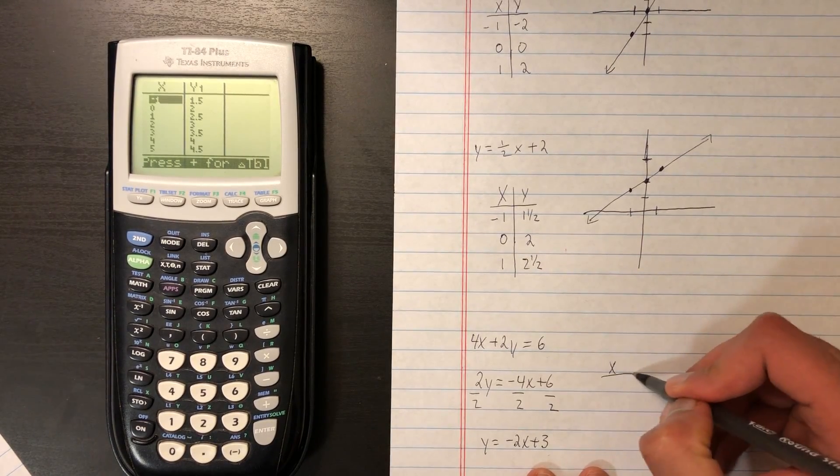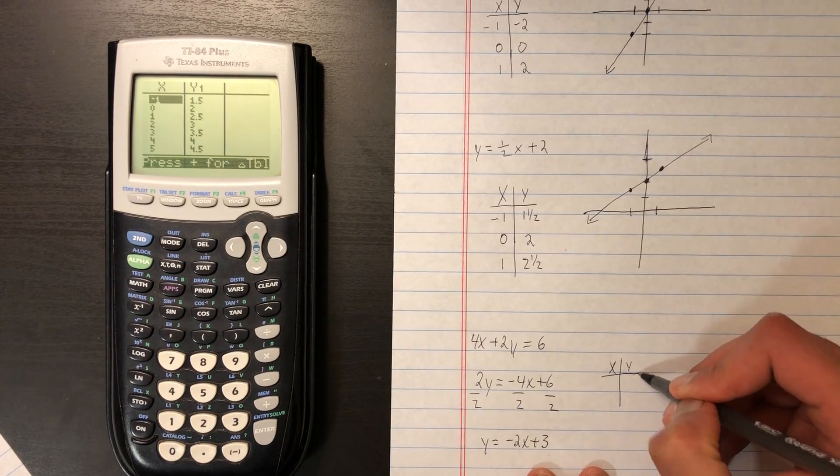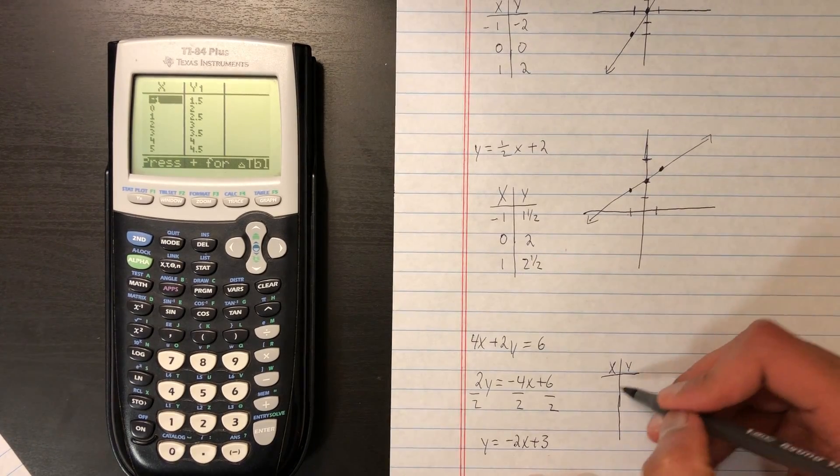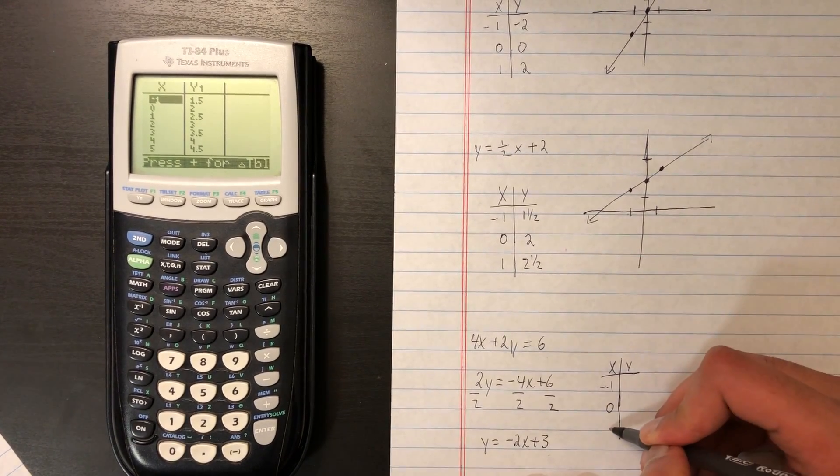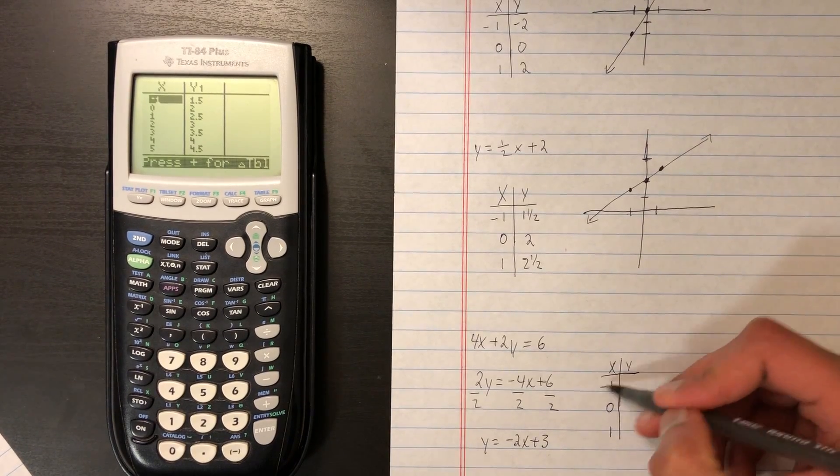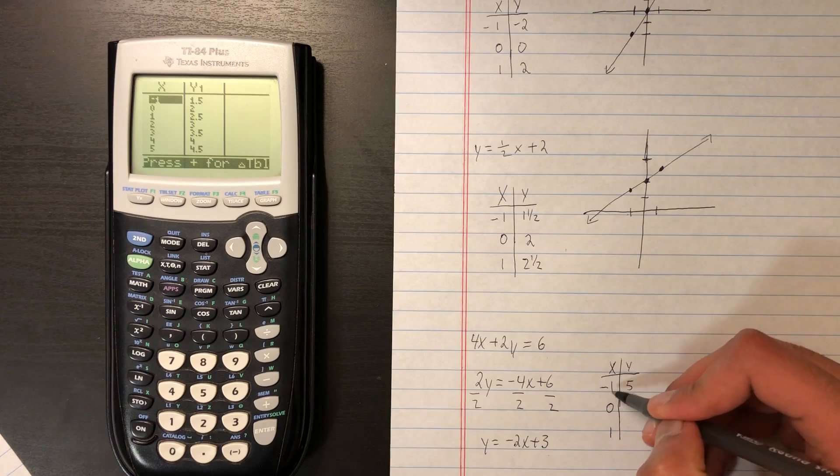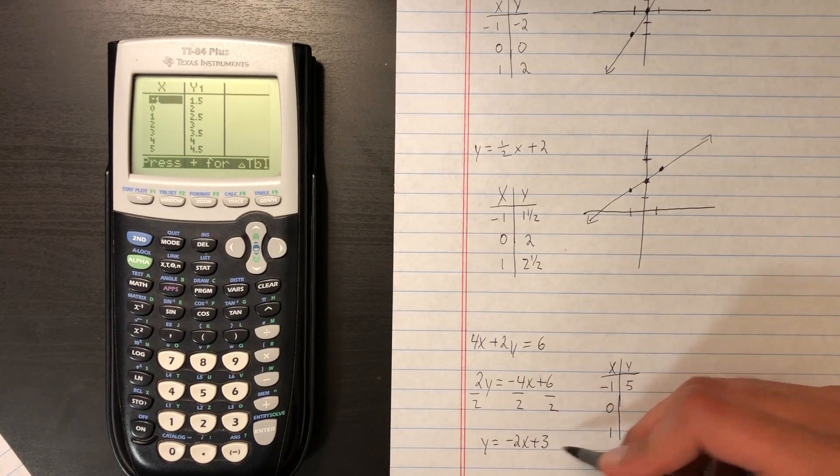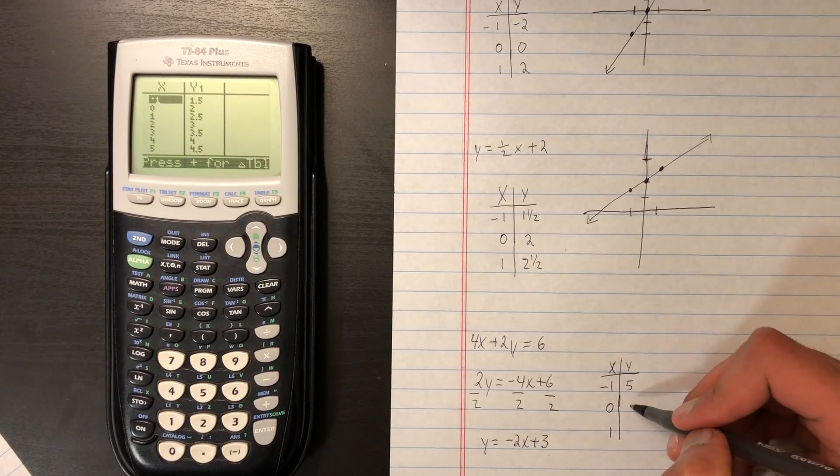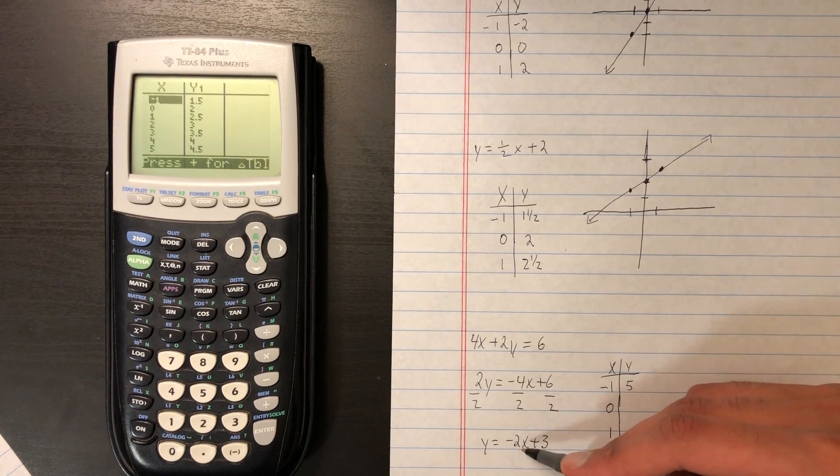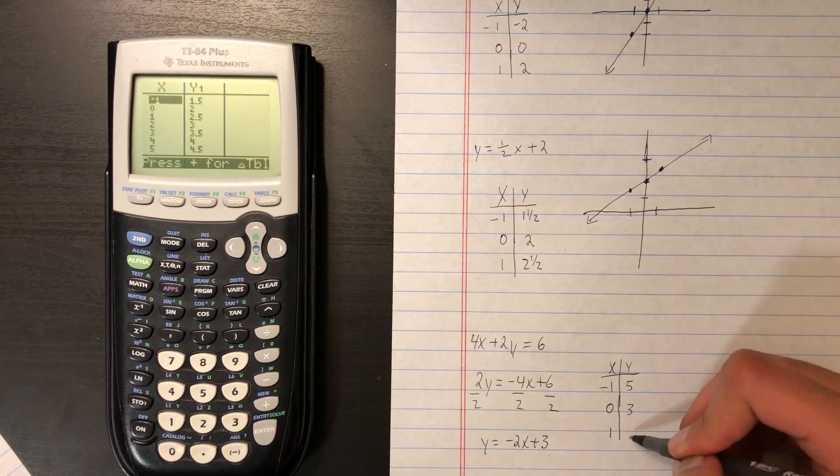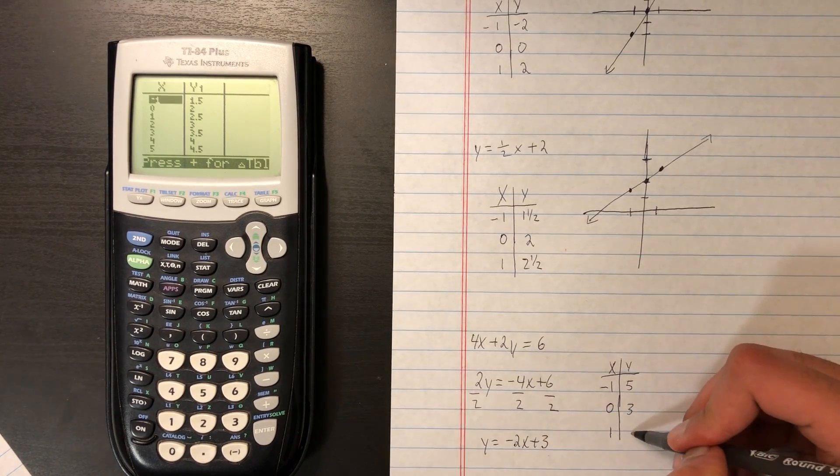Let's create an xy table to get some values to plot down. Let's use negative 1, 0, and 1 again. So negative 1 into this equation equals 5. Negative 1 times negative 2 is 2, plus 3 is 5. Plug in 0 for x, we get 3. And we plug in 1 for x, we get 1.